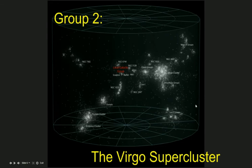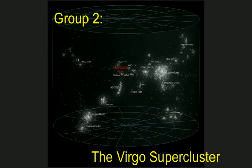Moving on to group two: our galactic local group is near the Virgo supercluster. This is a whole group of other galaxy clusters. Virgo is indeed a constellation, which is why we give it that name. It has all these other clusters of galaxies in it. So think about that — we are part of the solar system, which is part of a galaxy, which is in a cluster of lots of other galaxies. This is the Virgo supercluster.